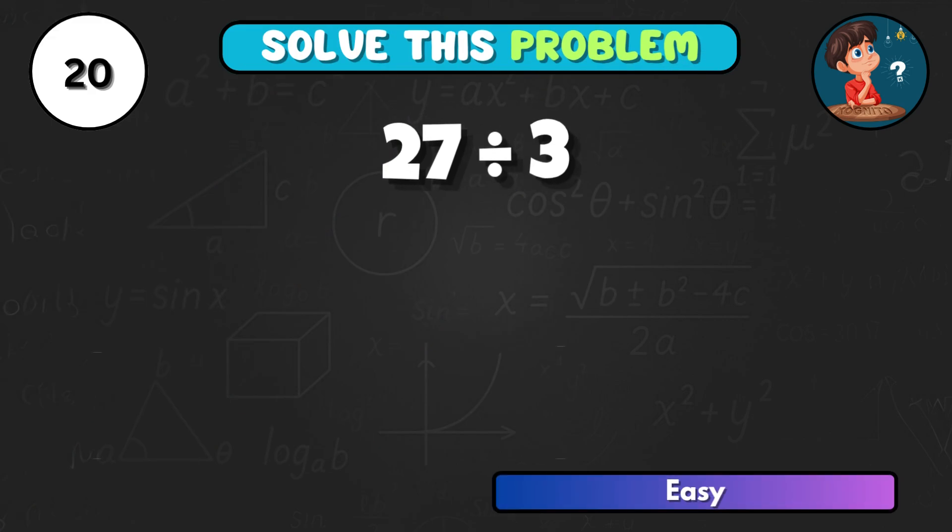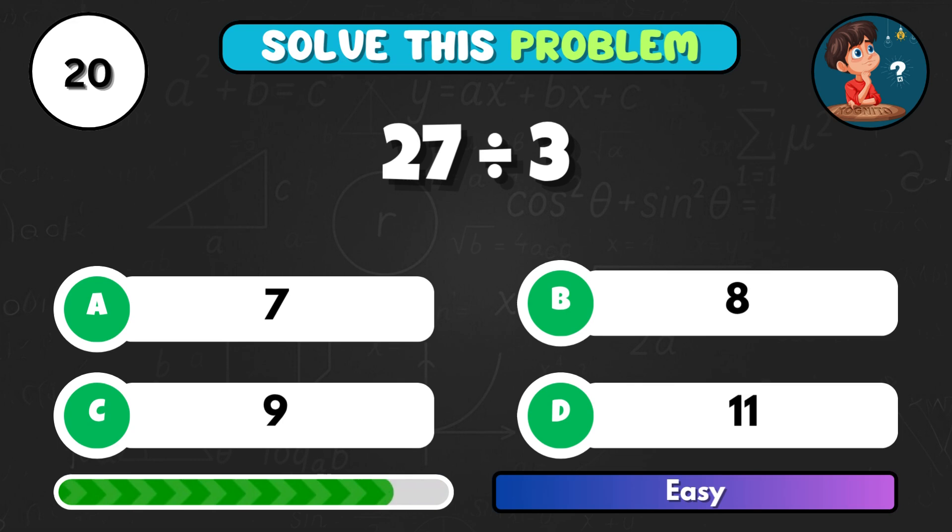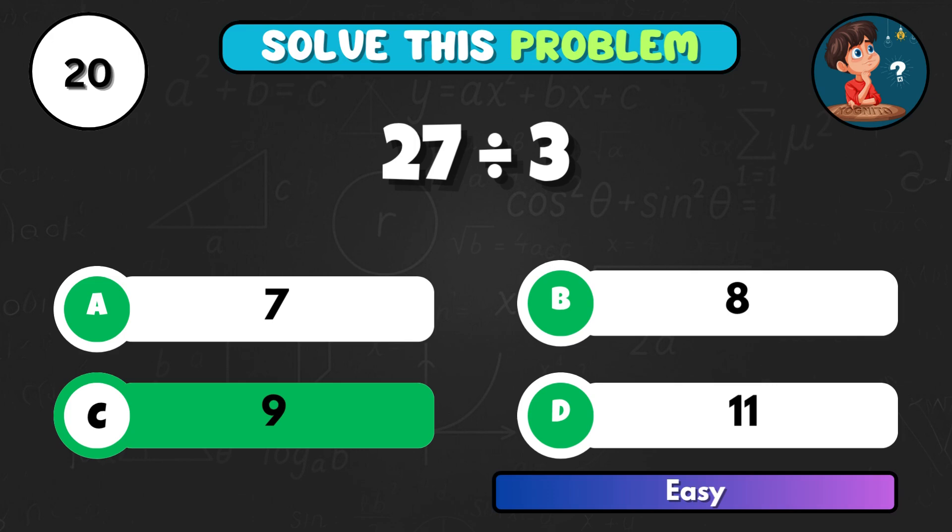27 divided by 3, what's your result? Correct letter C and that's 9.